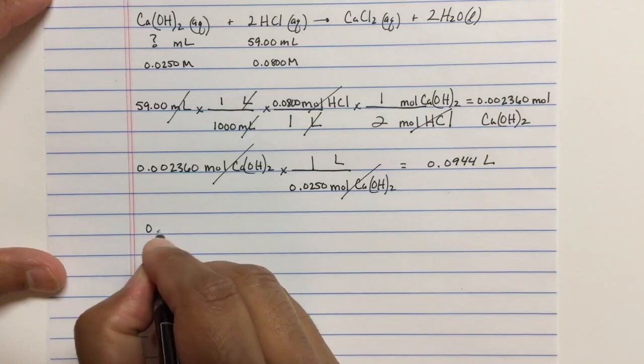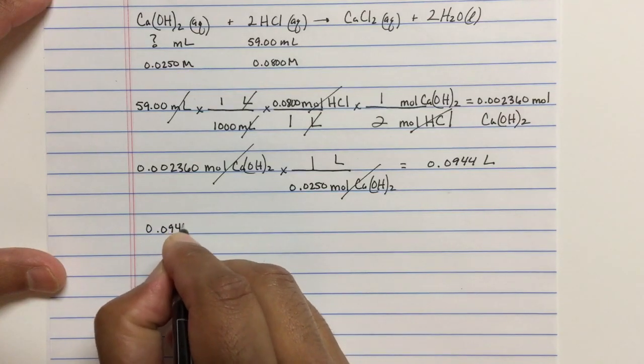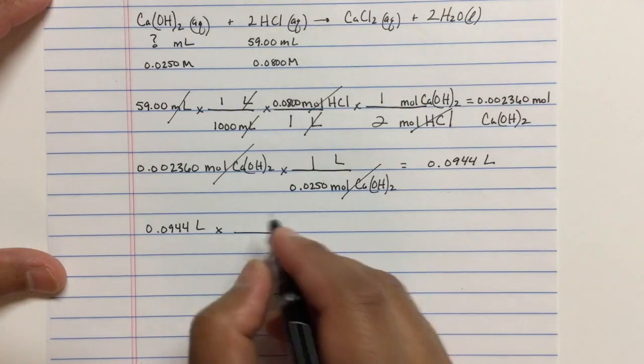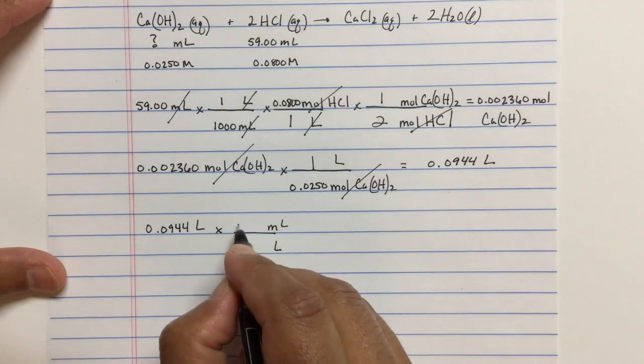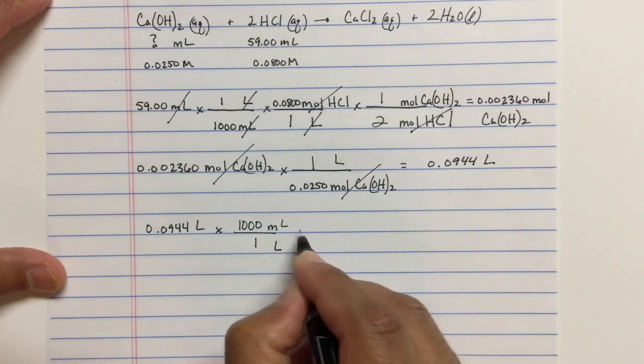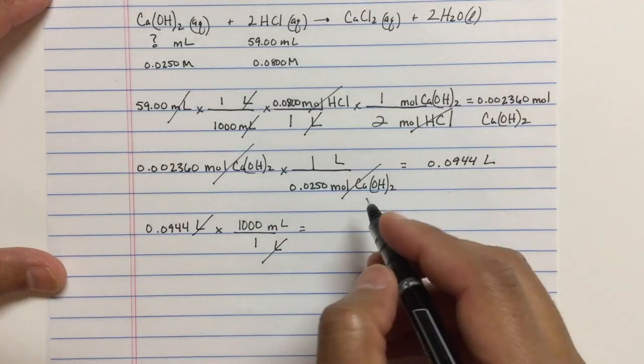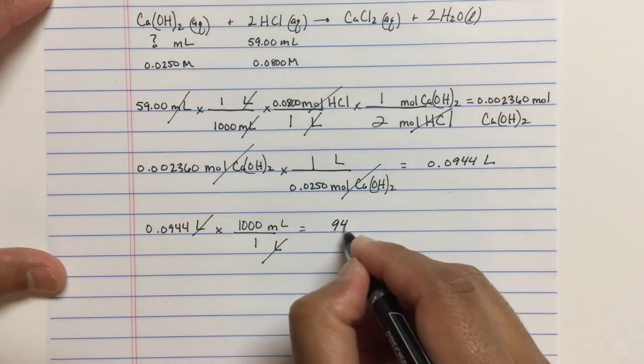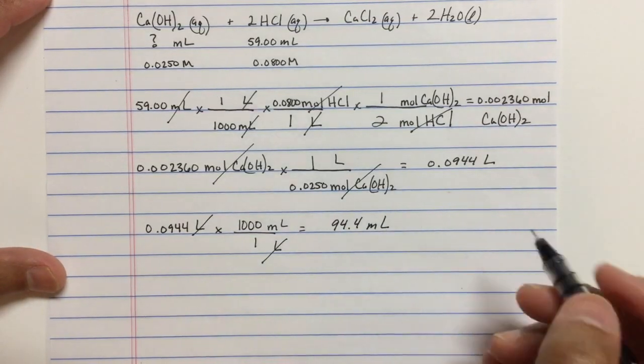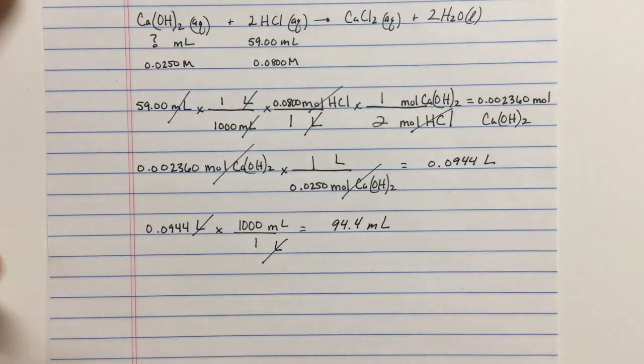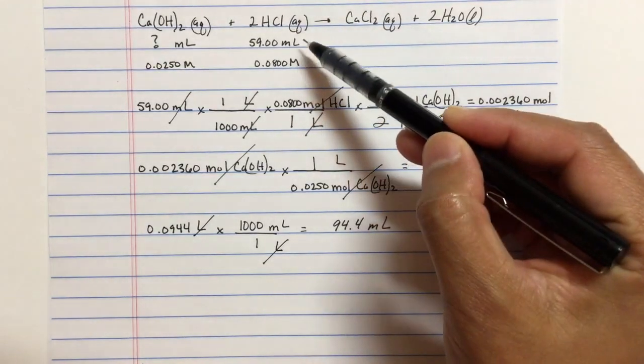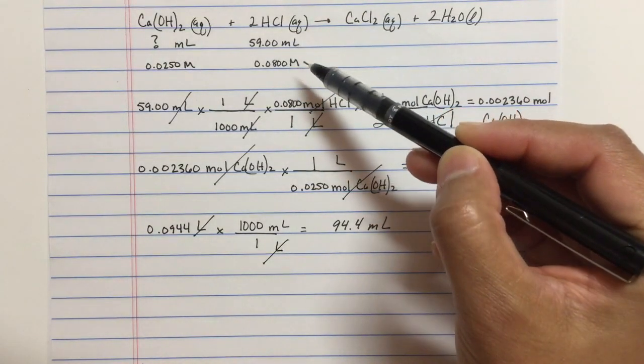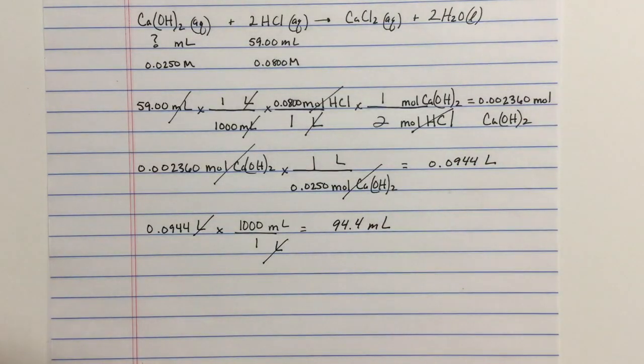Typically we want to report things in milliliters, so we'll just do a conversion here of liters to milliliters. This would be 94.4 milliliters. So this is the amount of calcium hydroxide solution that's required to react with this volume and this molarity of the HCl.